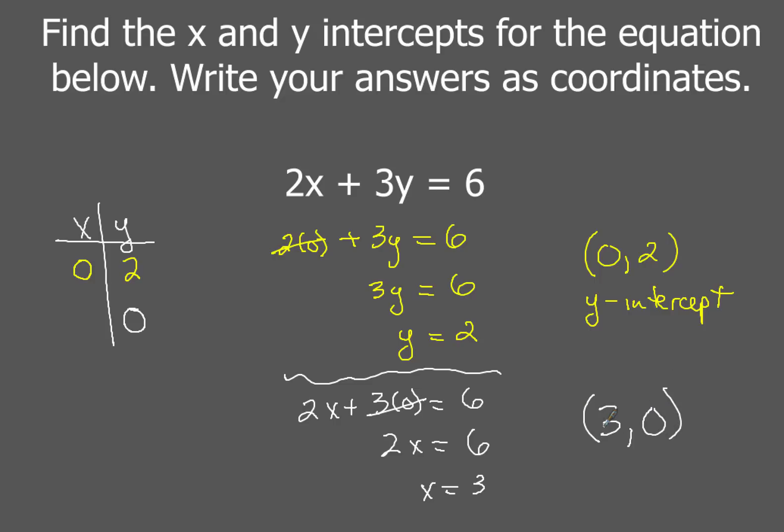So three comma zero is going to be the x intercept.